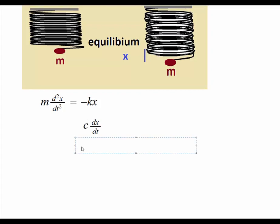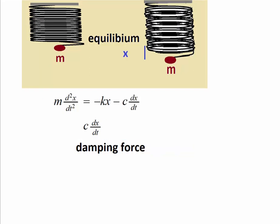Generally, that force is called damping and it's proportional to a power of the velocity, which is dx/dt. In our case, we will just assume that it's a constant multiple — by a positive constant c — of the velocity, no other power. So for a positive constant c, we are treating c times dx/dt as our damping force.